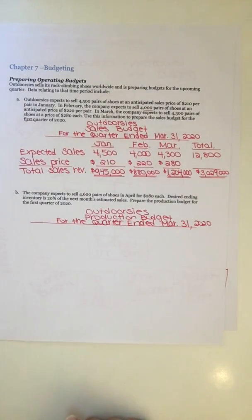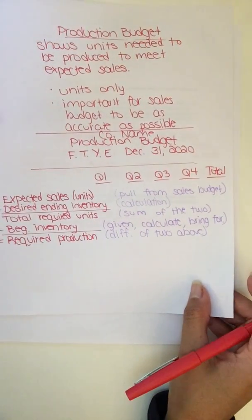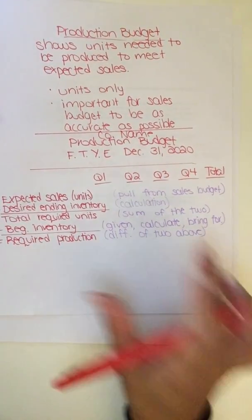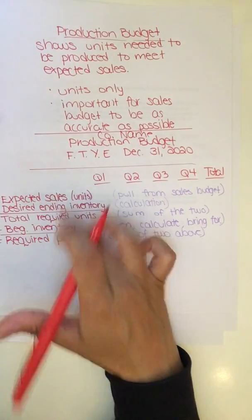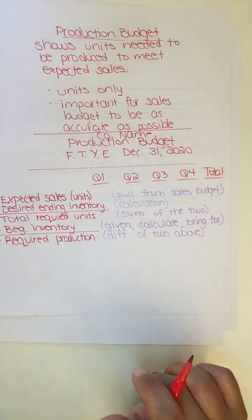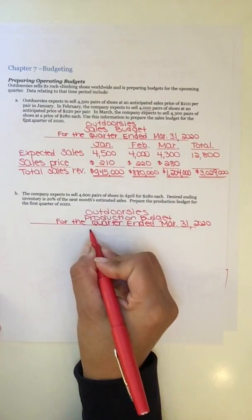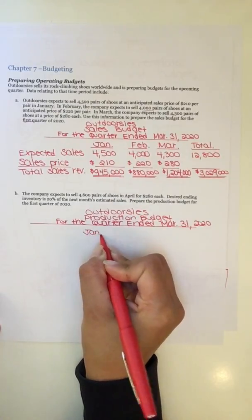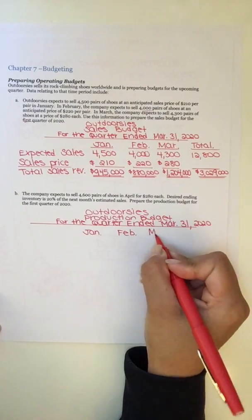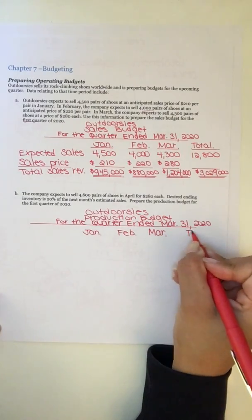On to the production budget. We did that one a couple videos ago. It looks something like this if you remember. So we'll go ahead and identify our columns and then put our rows off to the side. We have our first column is January, Feb, March, and then total.